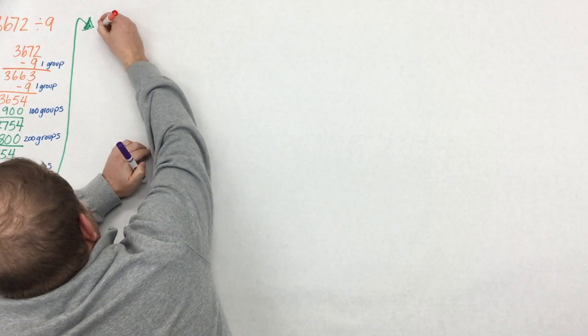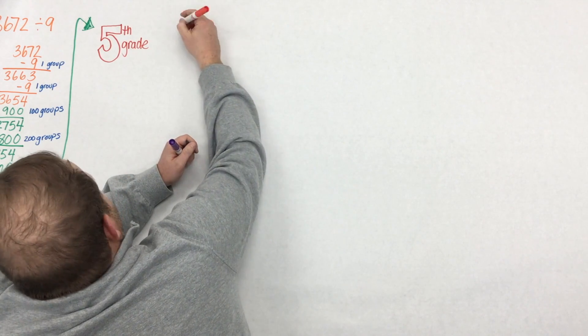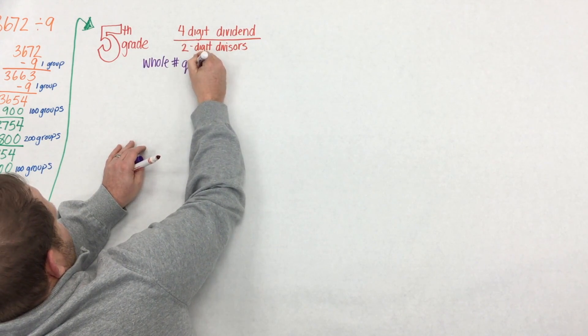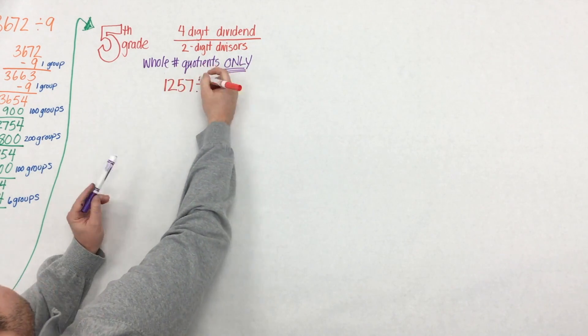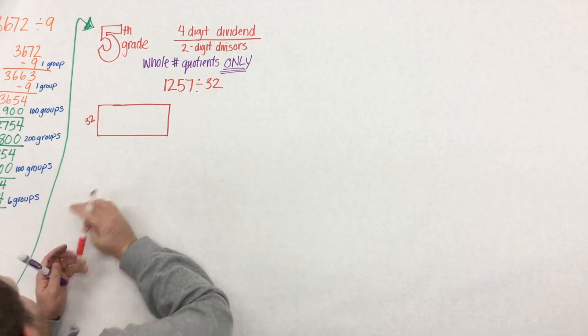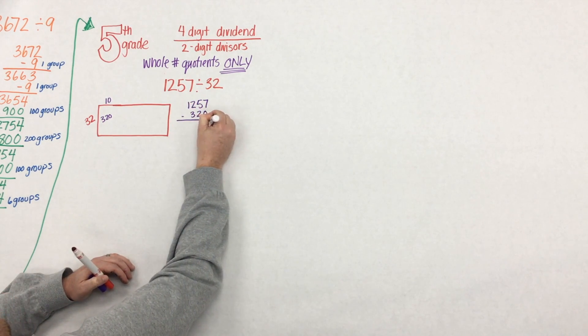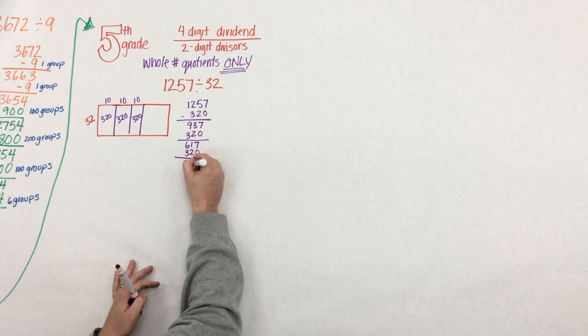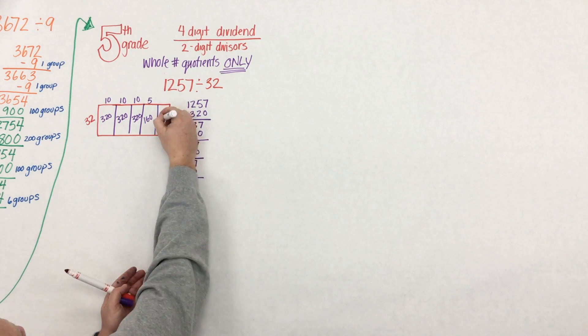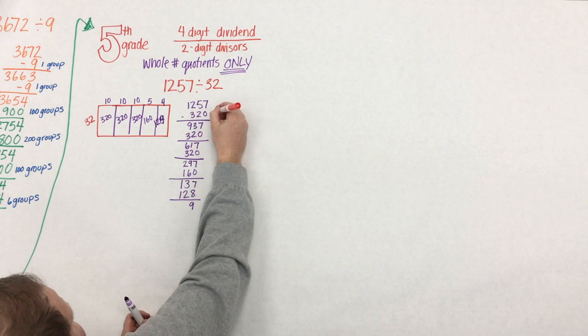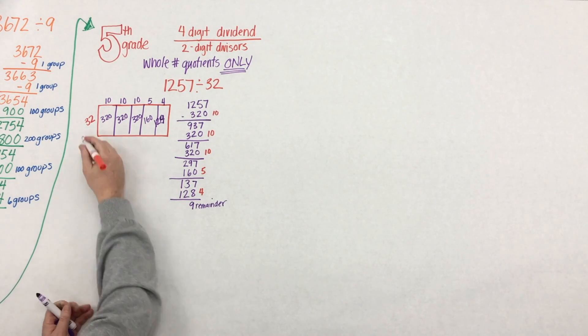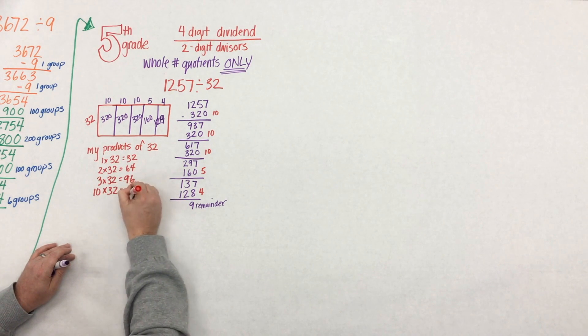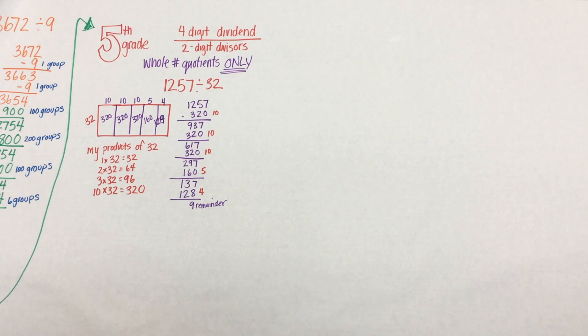Then, as students begin to dive into fifth grade, they extend this understanding that they've built conceptually from third and fourth grade. Only this time, they deal with four-digit dividends and two-digit divisors. The big piece here is that students deal with numbers and equations where they'll only have whole number quotients. All that means is that the decimal shouldn't be in the answer, but it can be in the dividend, and we can have a decimal in the divisor. So here, we make that connection again between the representation and the expression. And we write our partial quotients off to the side. It just helps us keep track. So students might not know all their multiplication facts, but they do know three or four. So here's their products of 32. Every student will know these. Let them start there.